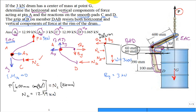And N sub C comes in at 12.99 kilonewton. That was one of our unknowns that we were asked to solve for. So, we'll go ahead and box that. Did that help you a little bit?